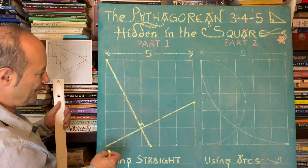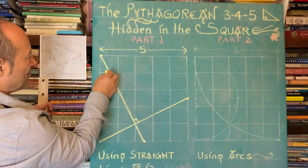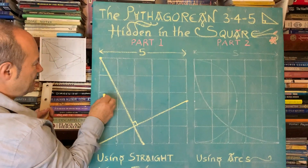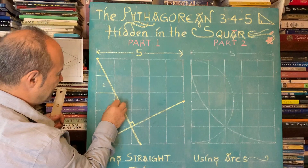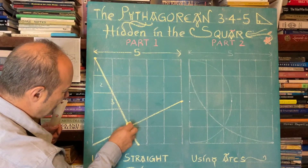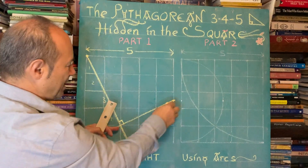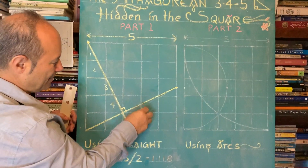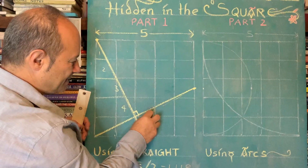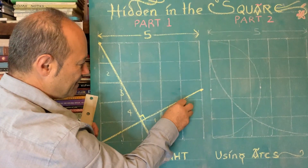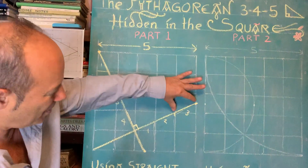Before I draw the third line, let me count the units. Going across: one, two, three, four — so this length here is four units. And checking the other segment: coming up, one, two, three — they're all one unit, so this length is three units.